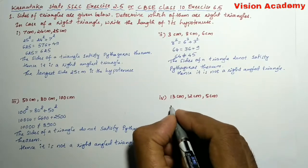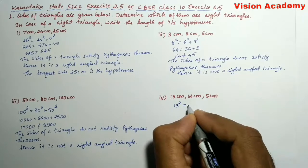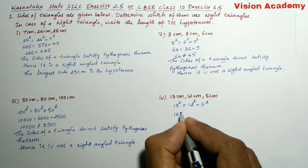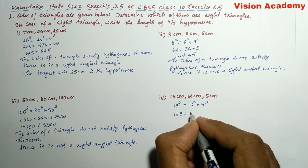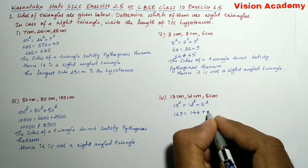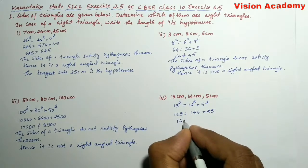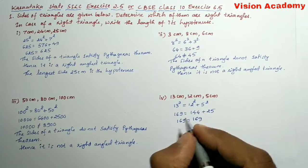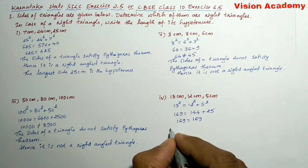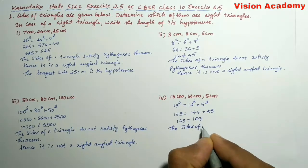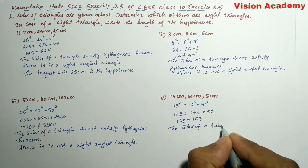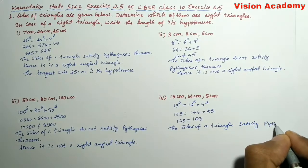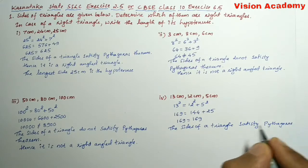Next, move on to the fourth one. Here 13² = 12² + 5². 13² is 169. 12² gives us 144, plus 5² gives us 25. 169 = 144 + 25 = 169. The sides of the triangle satisfy Pythagoras theorem.